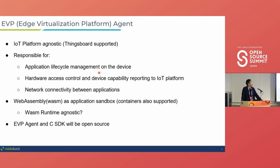EVP Agent is a component we're going to open source. EVP stands for Edge Virtualization Platform. This agent runs on a device. Firstly, it connects to the IoT platform in the cloud, and it's designed to be IoT-platform agnostic — it can easily be configured to integrate with different IoT platforms. Right now we have ThingsBoard supported, which is an open-source IoT platform solution, and several others as well.